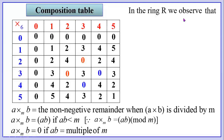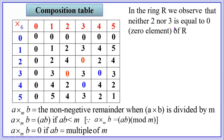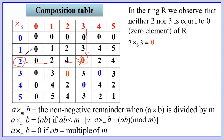In the ring R, we observe that neither 2 nor 3 is equal to 0. But 2 times 3 (modulo 6) is 0. So 2 times 3 (mod 6) equals 0. This is very interesting — 2 is not equal to 0, 3 is not equal to 0, but the product 2 times 3 is 0. This never happened in any other branch of mathematics. This is a real wonder.